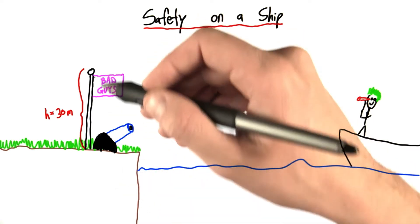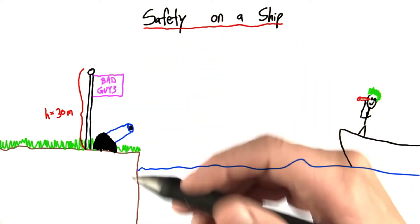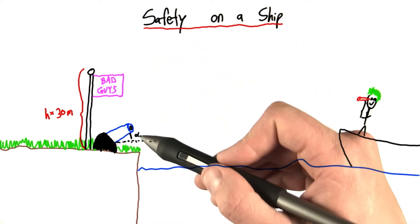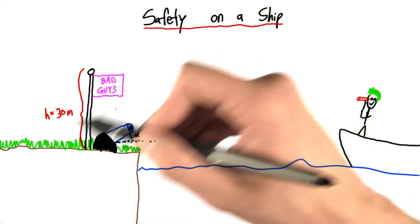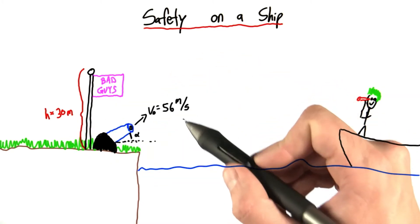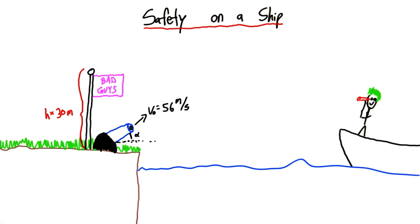The bad guys have taken over the pier, as we can tell by the flag saying bad guys. They have a cannon which they can adjust to any angle they want between 0 and 180 degrees, and it can fire cannon balls with a velocity of 56 meters per second.